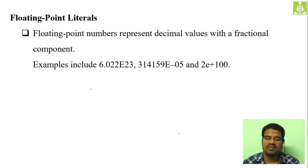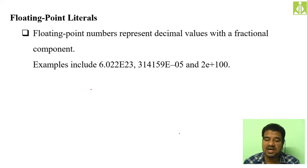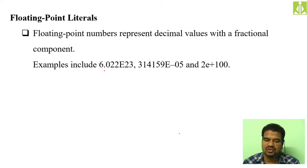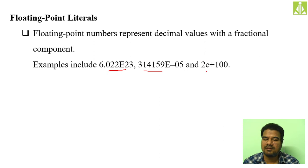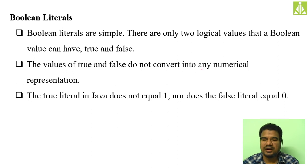Then floating point literals — constants with precisions. Floating point numbers represent decimal values with a fractional component — not only the whole number but also the fractional part. Examples: 6.022e23, 3.14159e-5, 2e+100 — all these are real numbers. Then boolean literals — as we know, boolean constants have only two logical values: true and false.